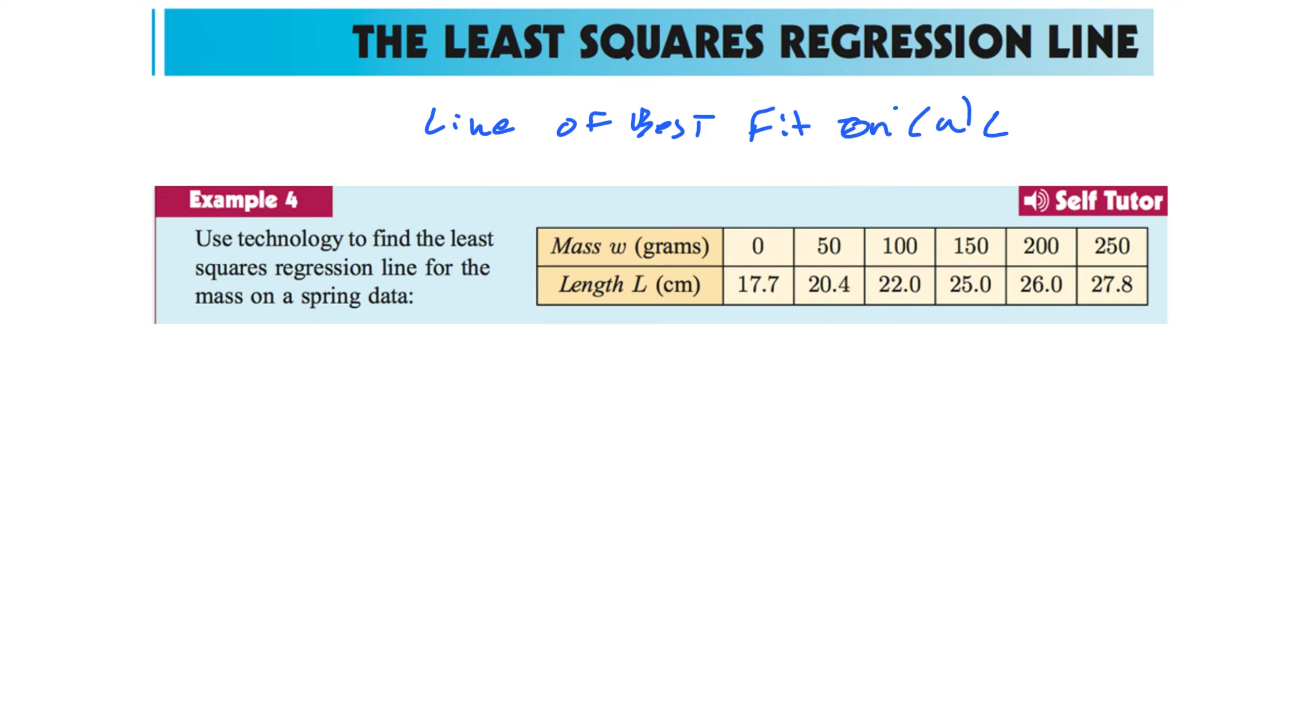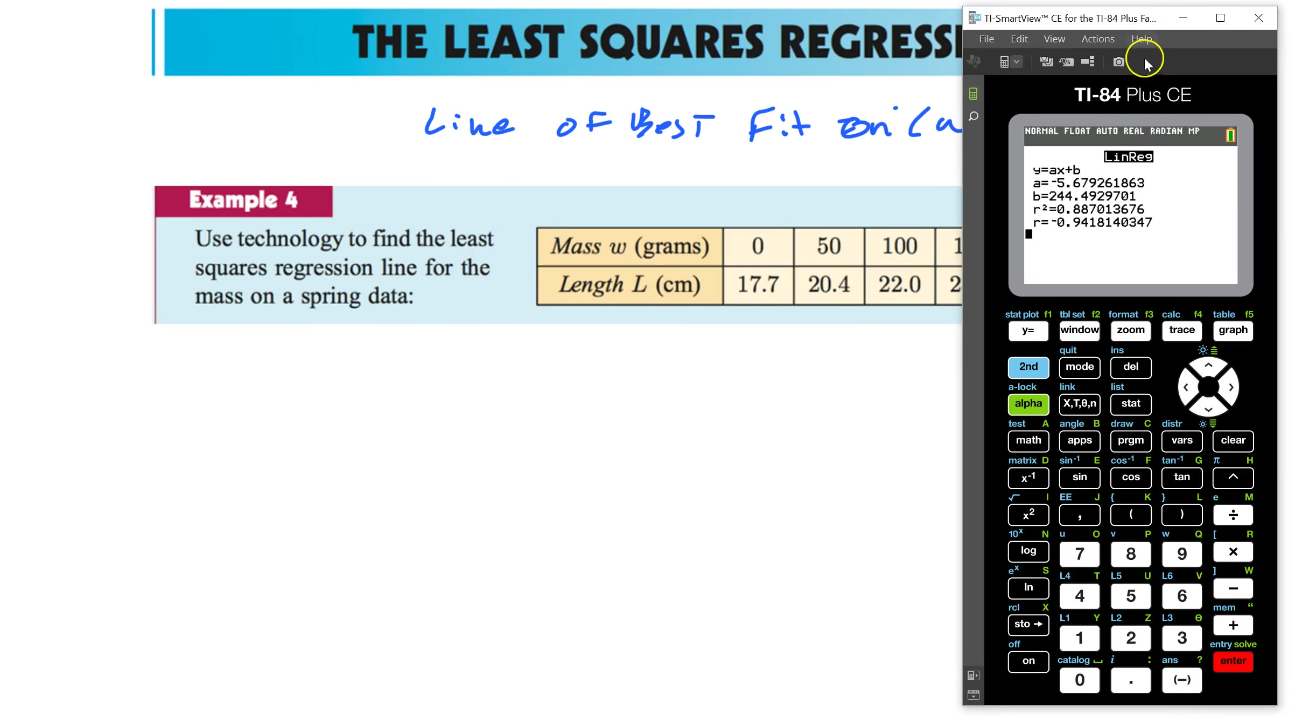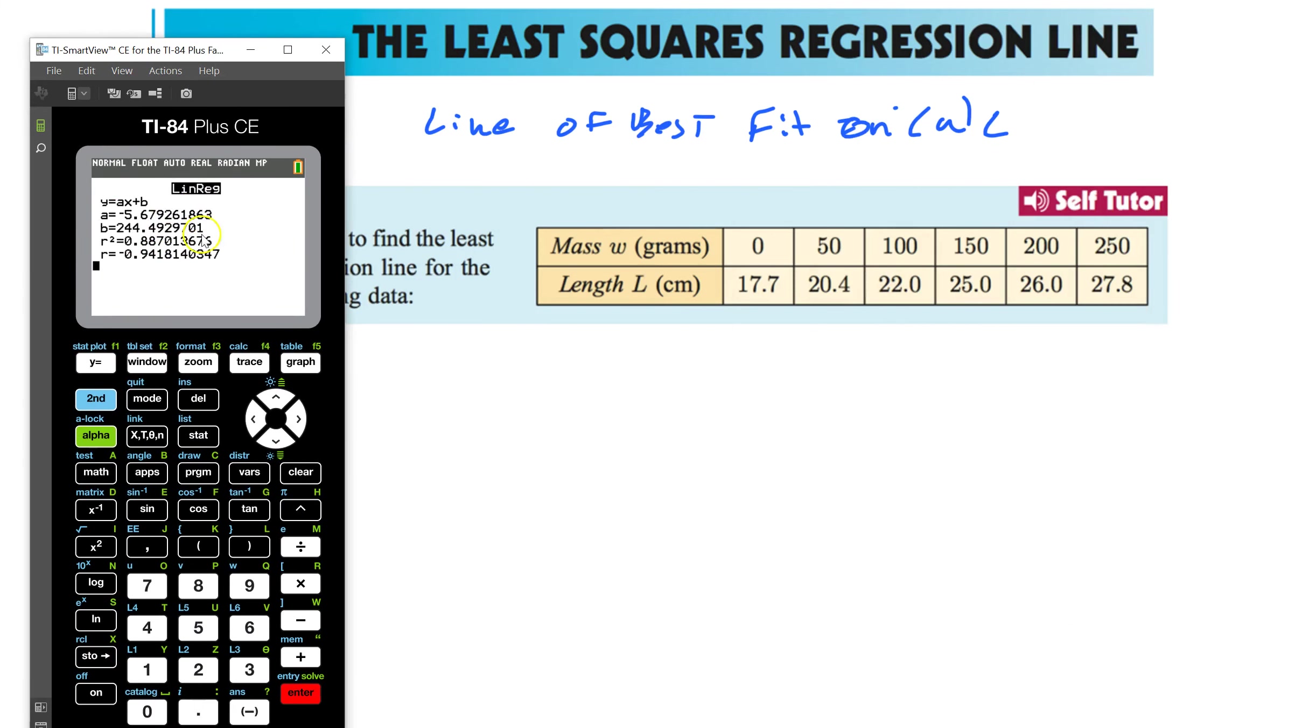So let's talk about how to do that right here. So you've got to bring out your calculator. Here's mine. It's actually the very same thing we just did right here. It's that again. Just now with this information. So, we're going to go stat edit. Our favorite thing to do apparently. We're going to clear out our data. Type in the new data. 150, 200, 250. 17.7, 20.4, 22.0, 25.0, 26, 27.8. So you have all your data in there.